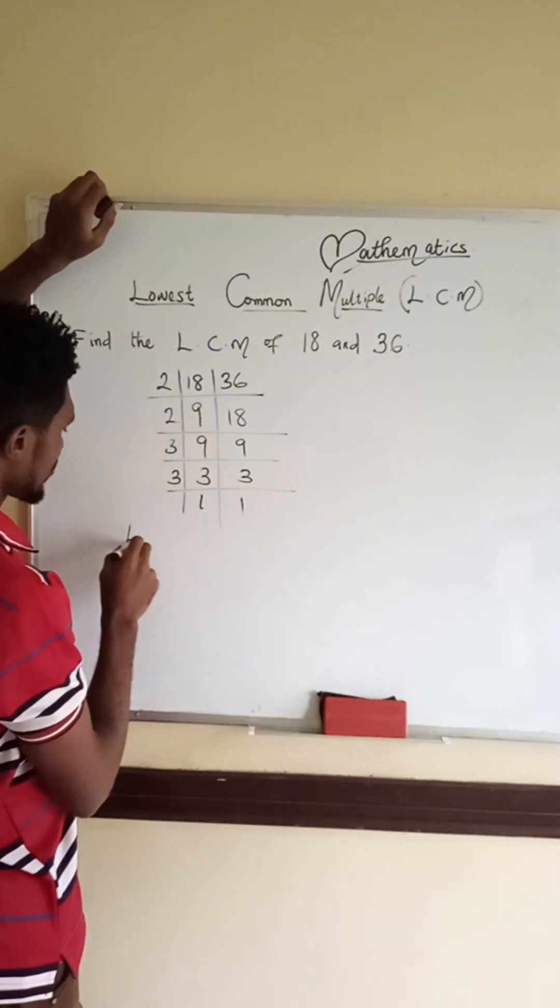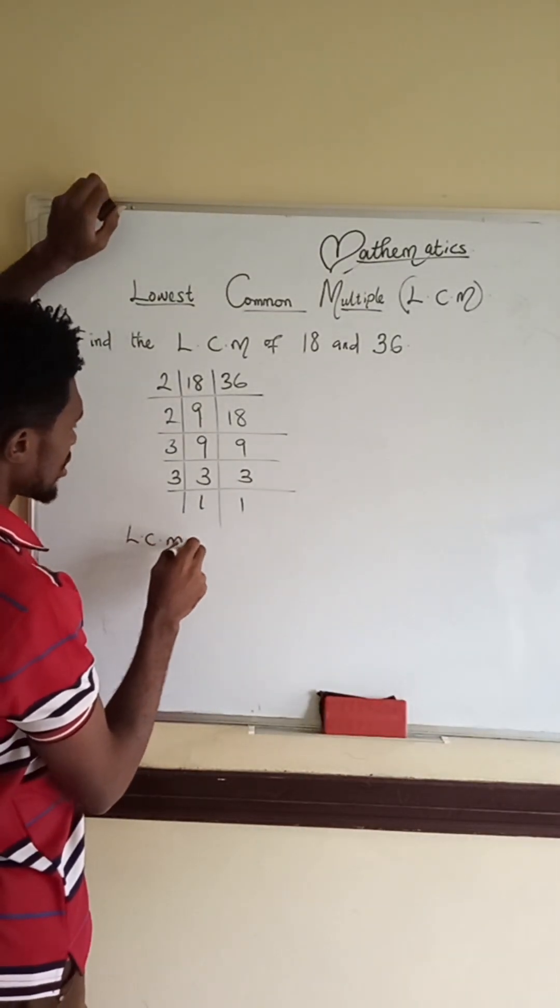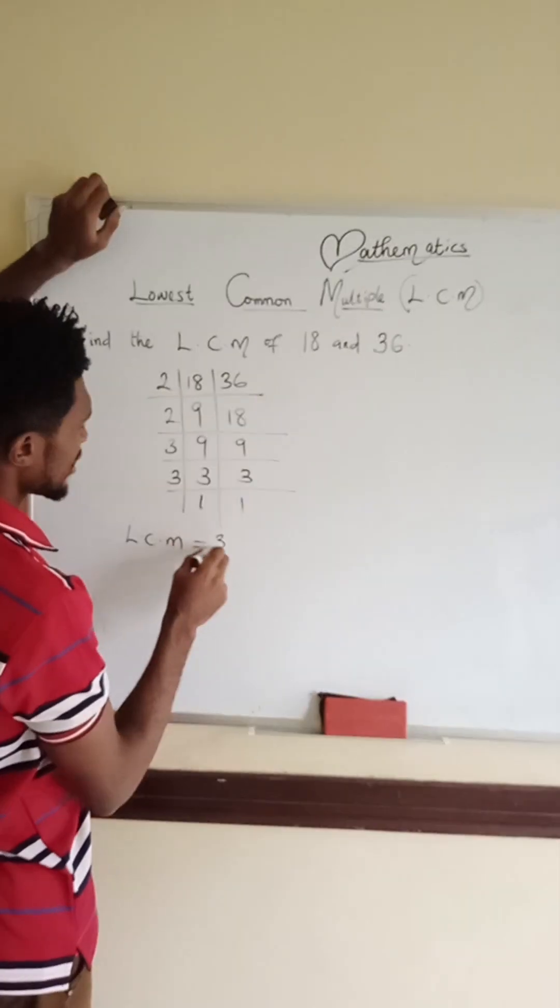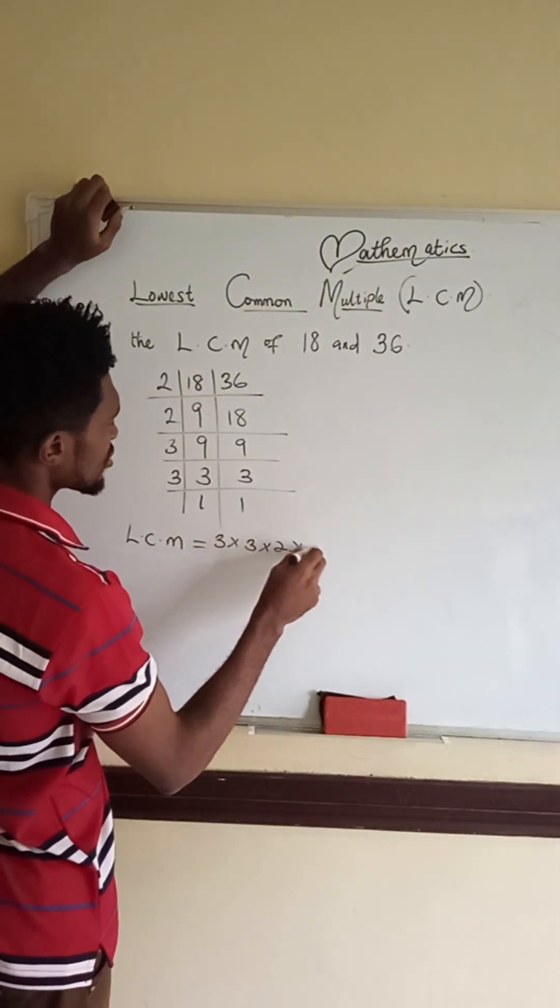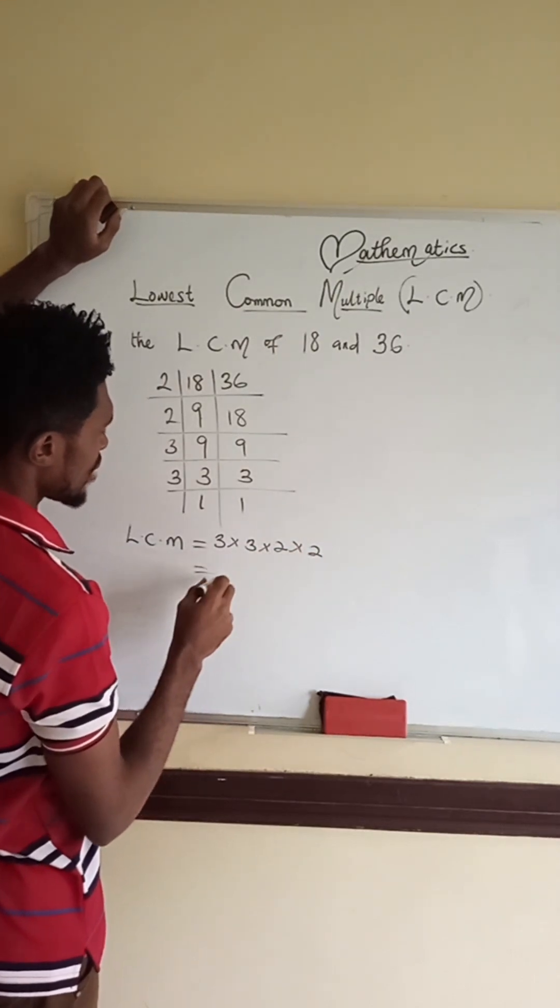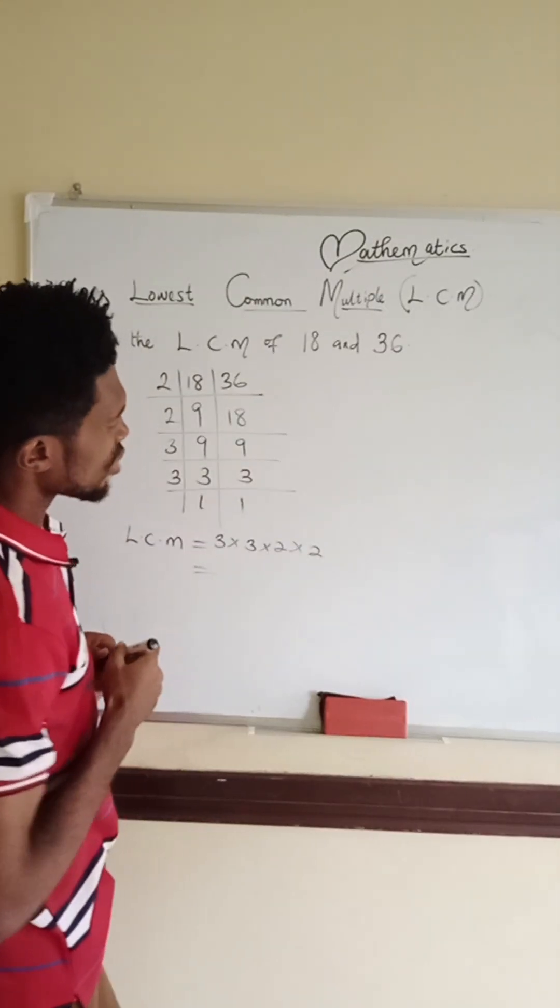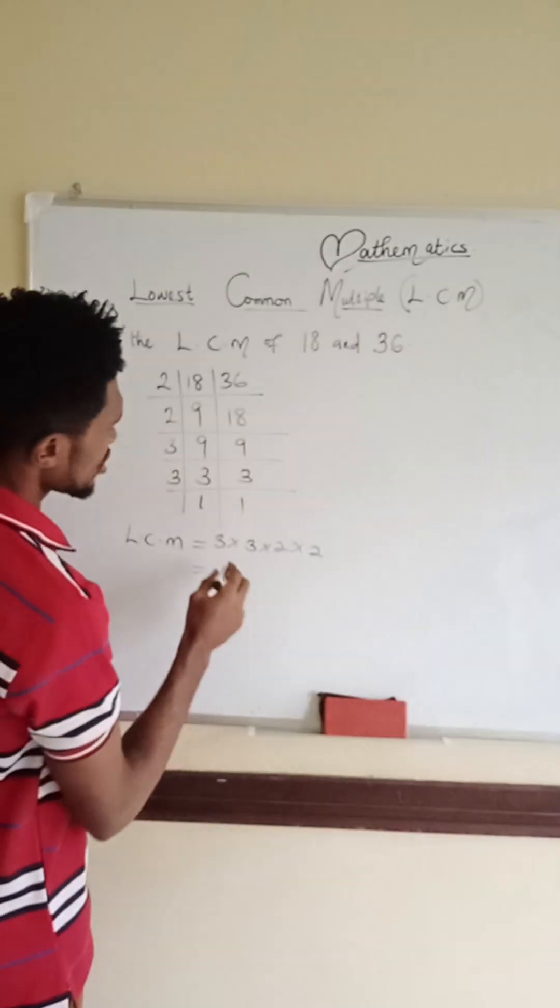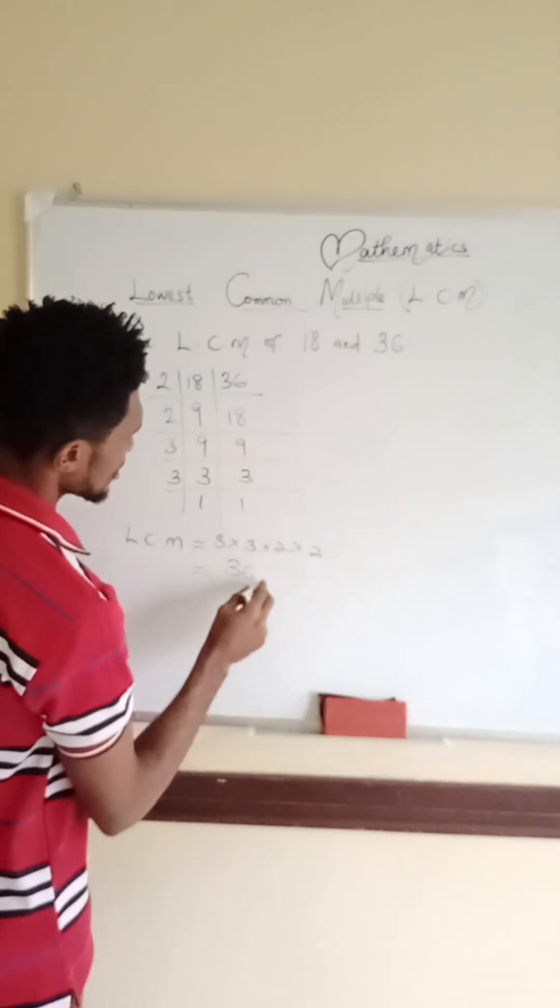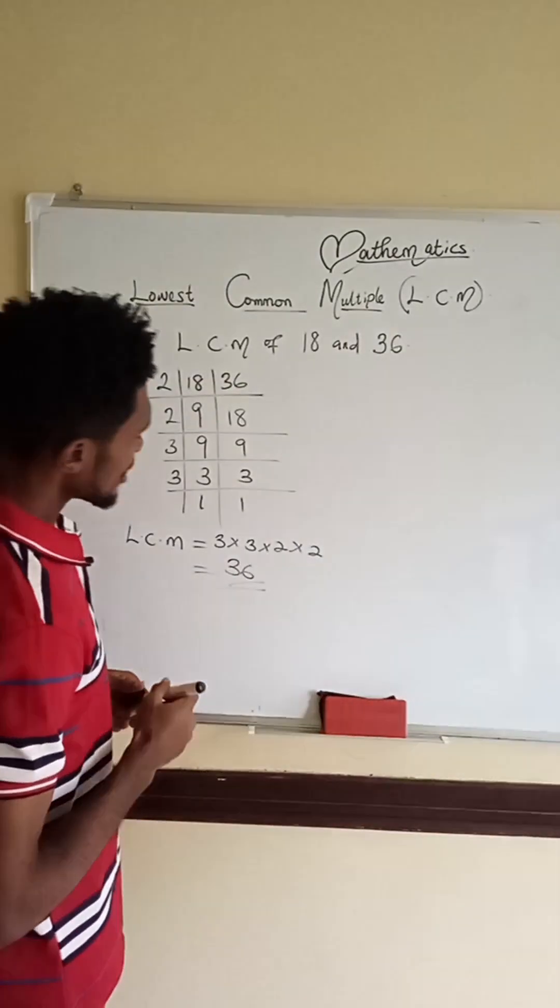So our LCM is equal to 3 times 3 times 2 times 2. 18. 18 times 2 is 36. Our LCM is 36.